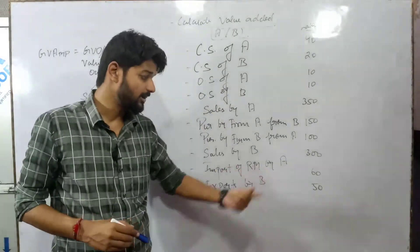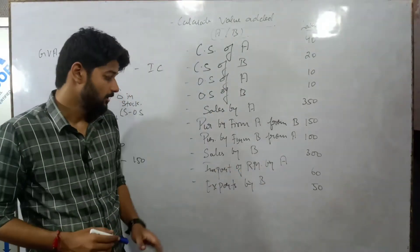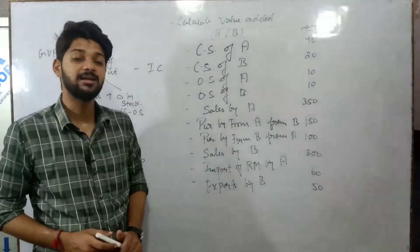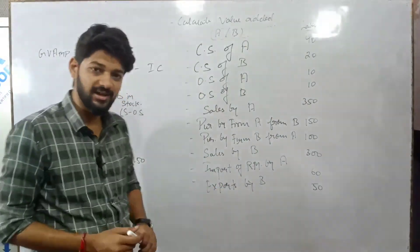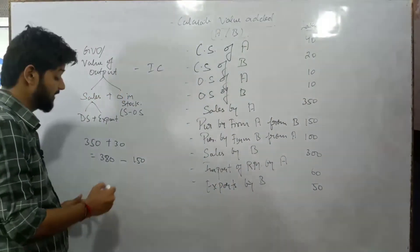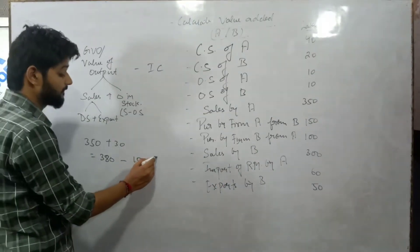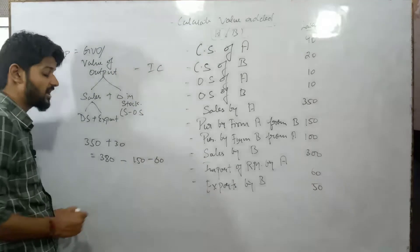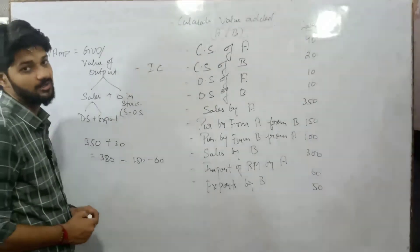Import of raw materials is 60 lakh, so Intermediate Consumption for Firm A is 150 plus 60, totalling 210 lakh.